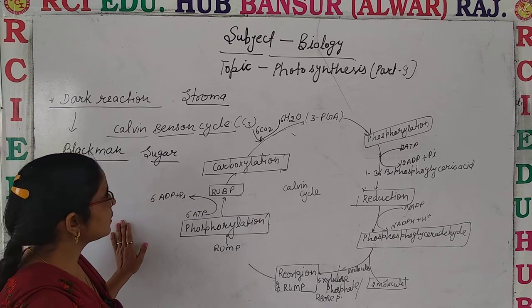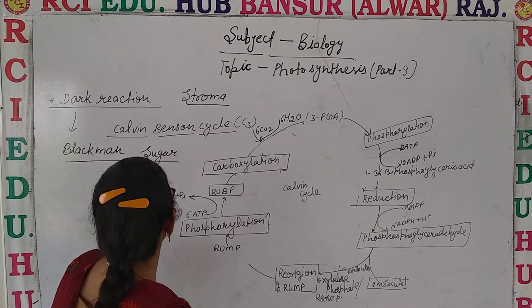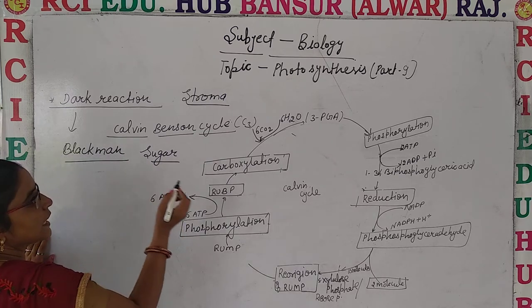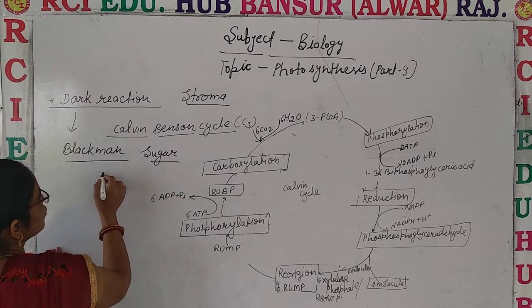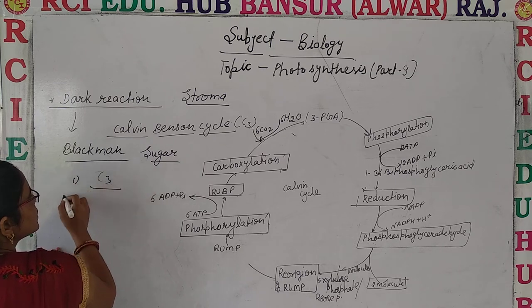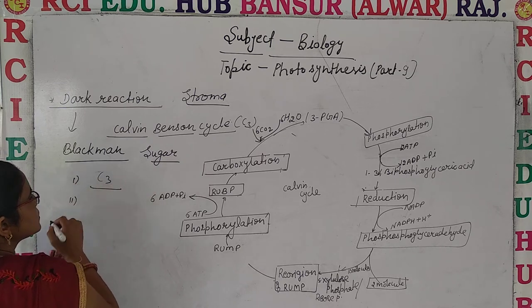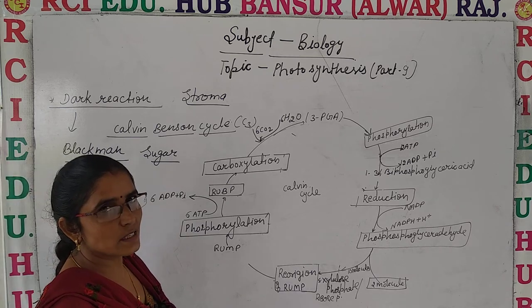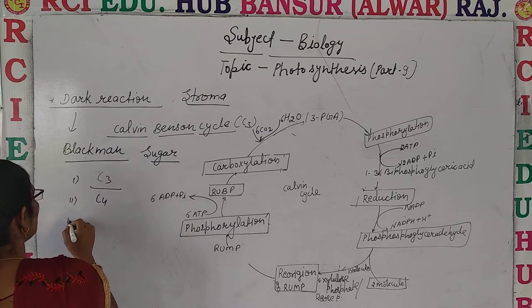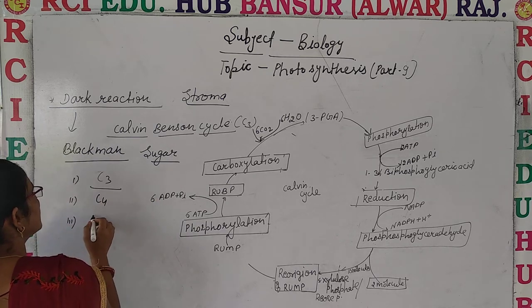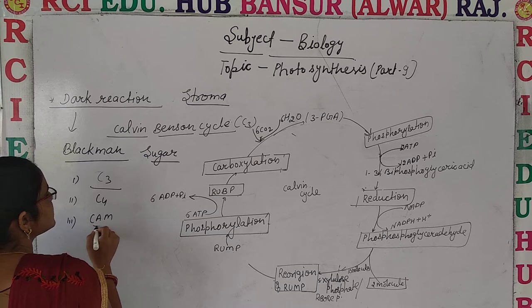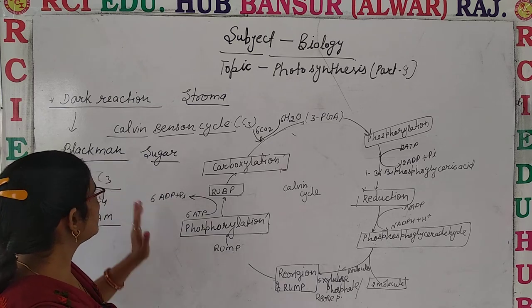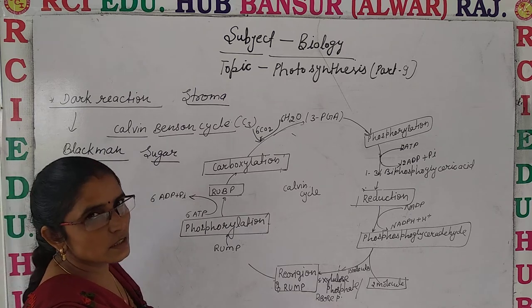The dark reaction has various steps through different pathways. First is the Calvin-Benson cycle, also known as the C3 cycle. Second is the C4 cycle, also known as the Hatch-Slack cycle. Third is the CAM pathway — Crassulacean Acid Metabolism. First of all, we will discuss the C3 cycle.